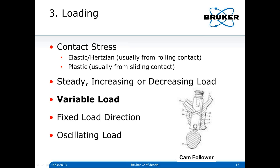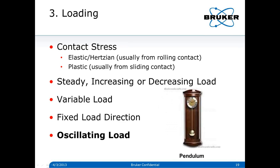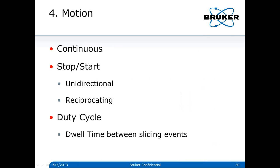You can have variable loading such as in a cam follower where changing the height changes the spring load. You can have a fixed direction load such as a rolling element bearing where the force is always in the same direction. Or you can have an oscillating load such as a pendulum where the point of contact changes. Changes in loading can also come from changes in speed or temperature which cause changing clearances — something we often forget when we do room temperature tests but real life involves higher temperatures.